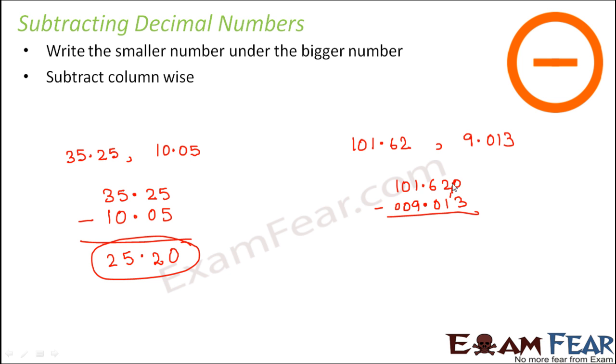So we borrow 1 from here, so it becomes 10. So 10 minus 3 is 7. Right, now you return that 1 again here, so that 1 gets added to this 1, so it becomes 2. So 2 minus 2 is 0, 6 minus 0 is 6. Now here again you have 1 on the top which is smaller than 9, so again we borrow 1 from here.